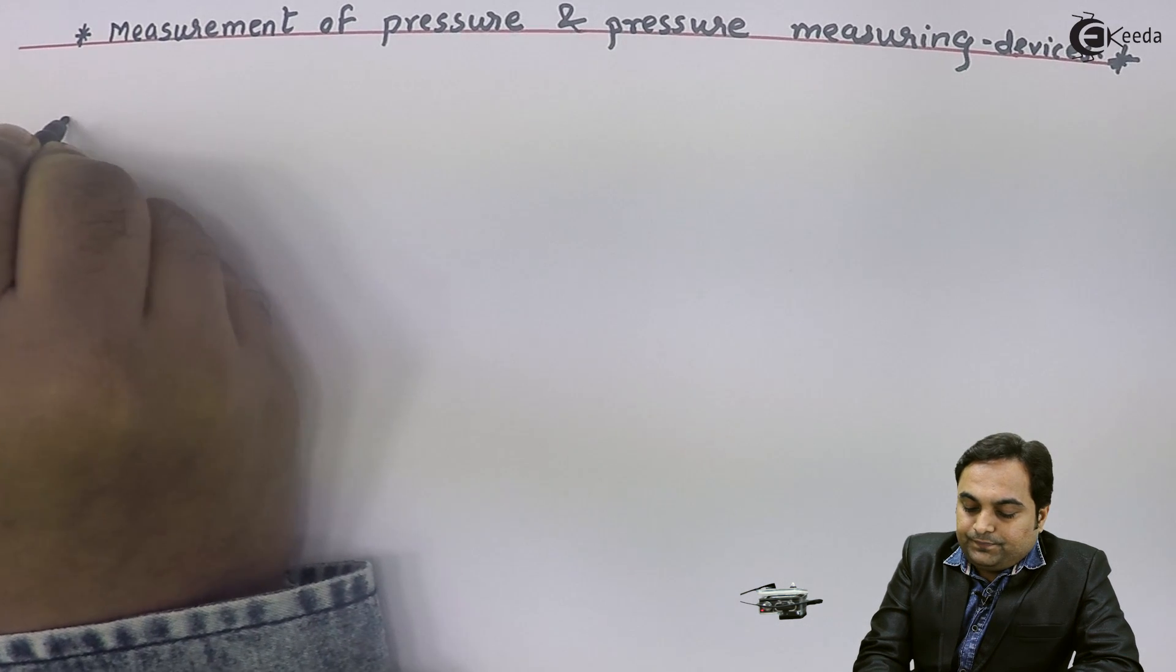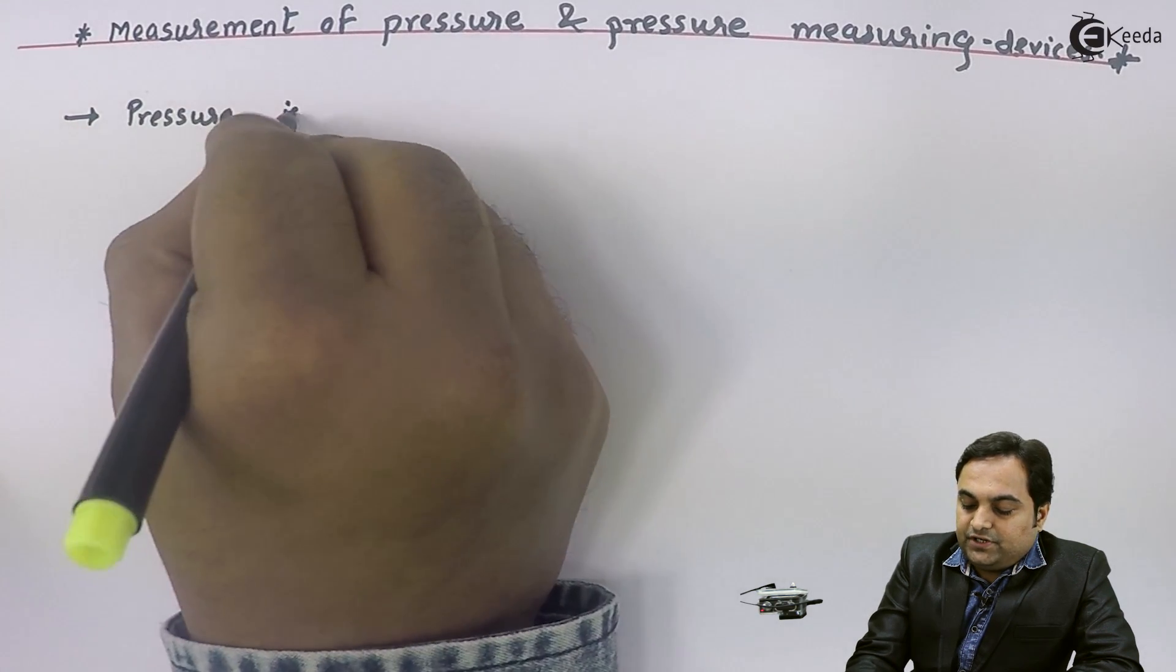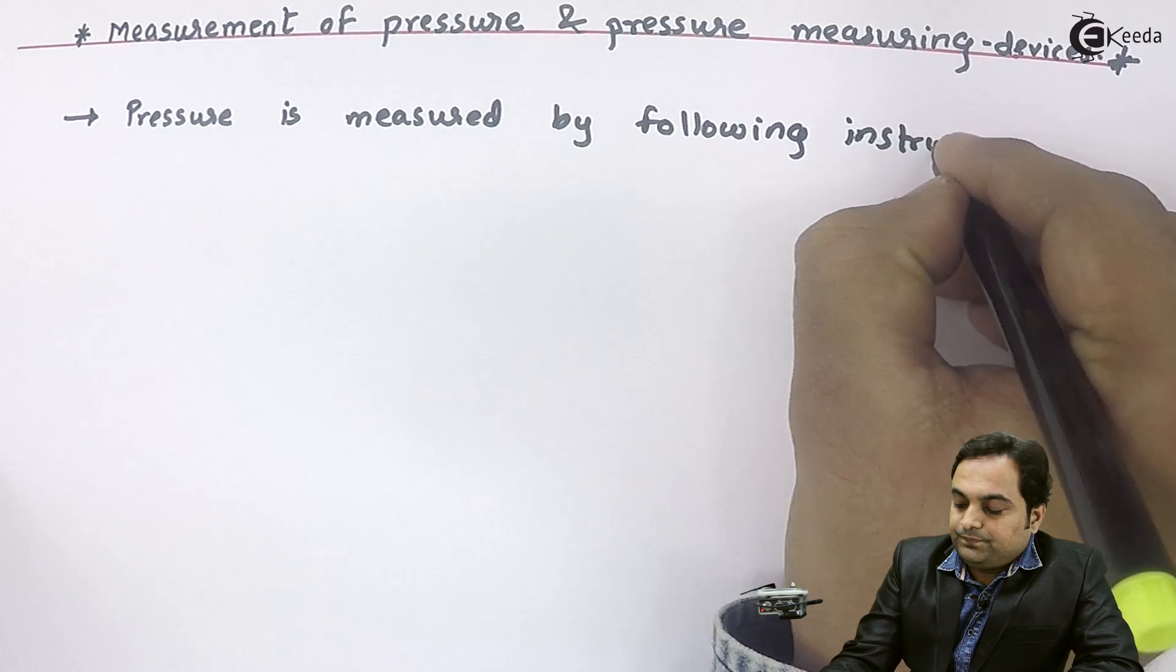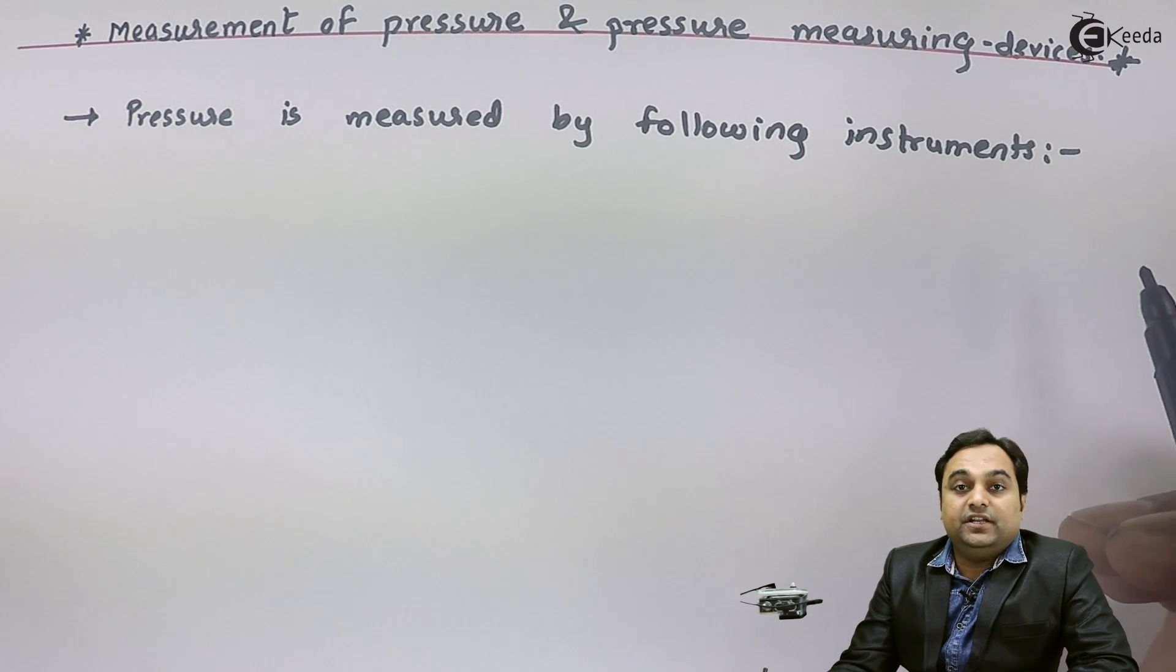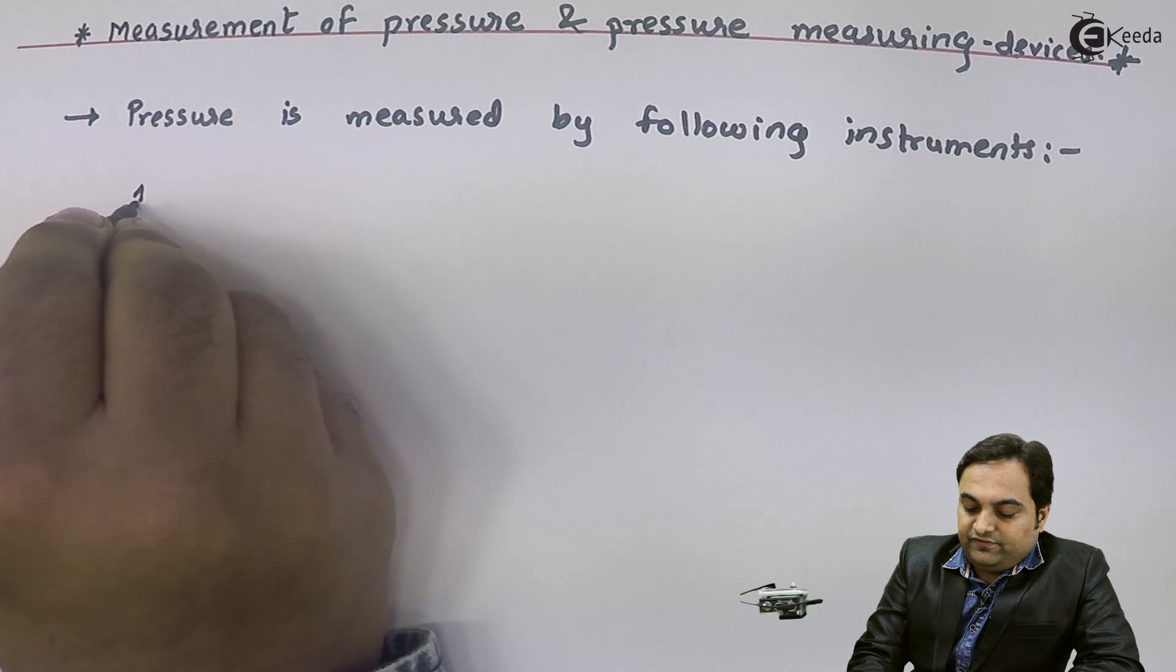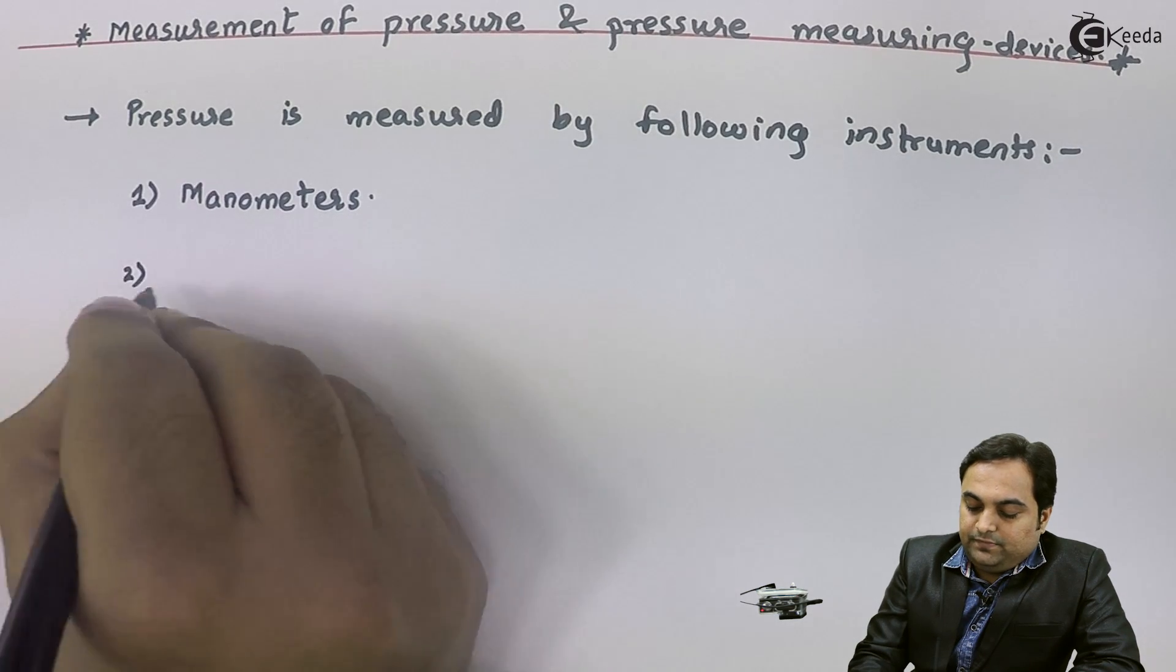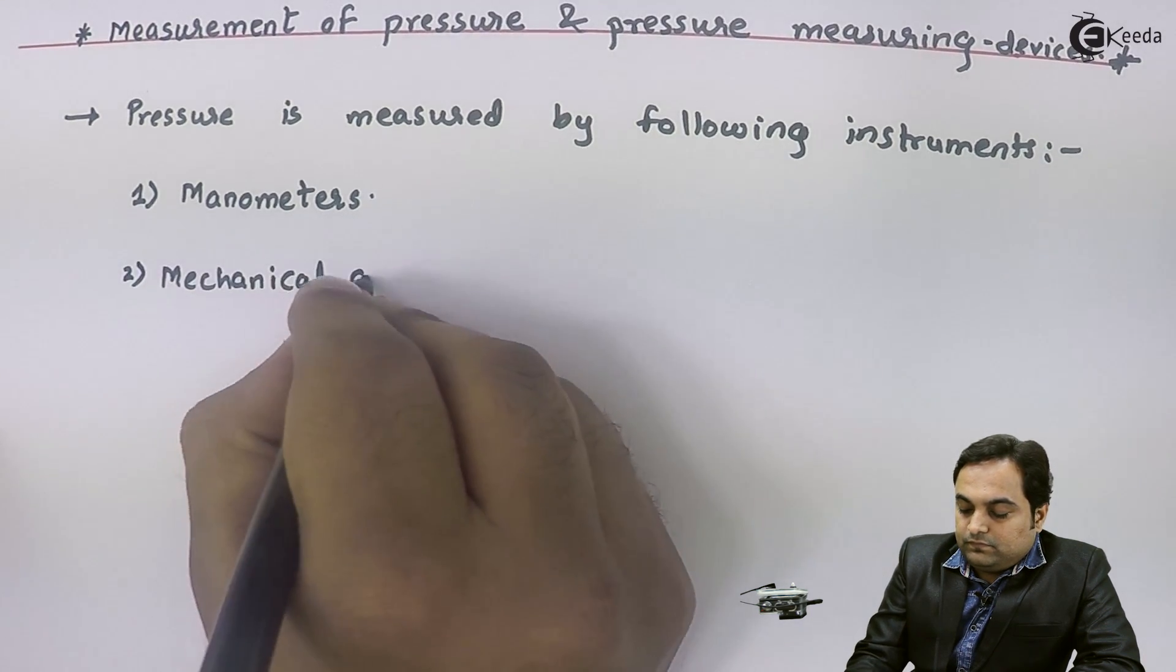I'll write down: pressure is measured by following instruments. Since in this video we are seeing the pressure measuring devices, I will mention the names of all the devices which we are using for measuring pressure. Now basically we have two devices - the first one is called manometers and the second category is mechanical gauges.